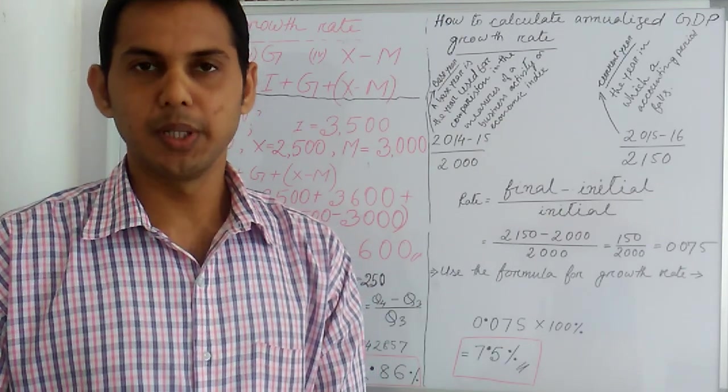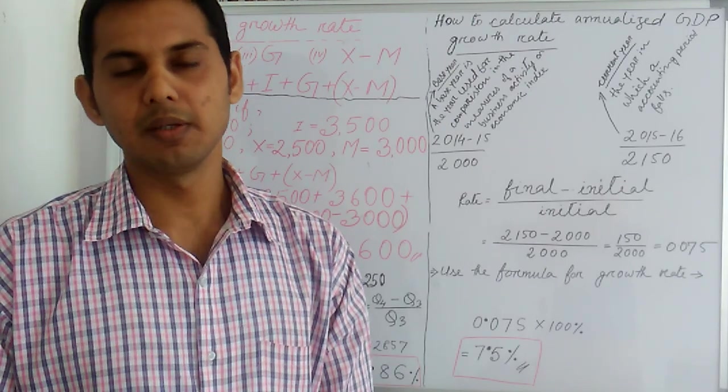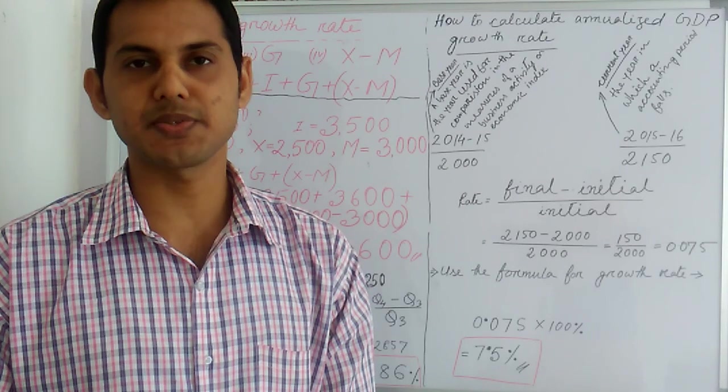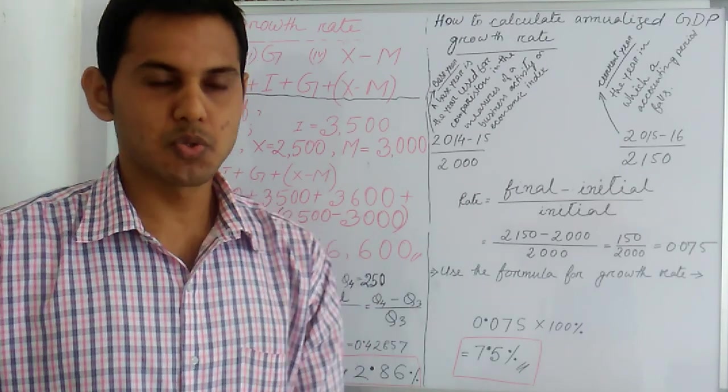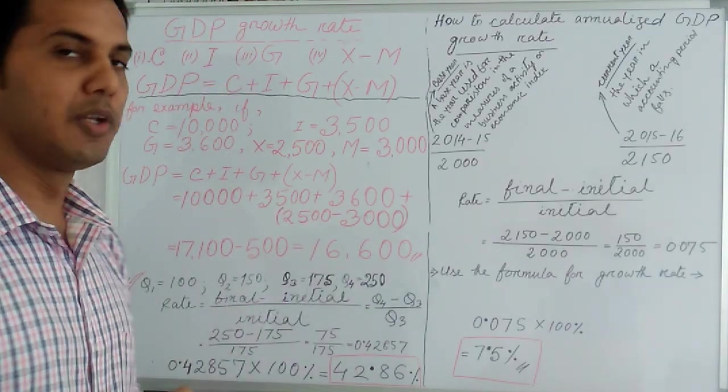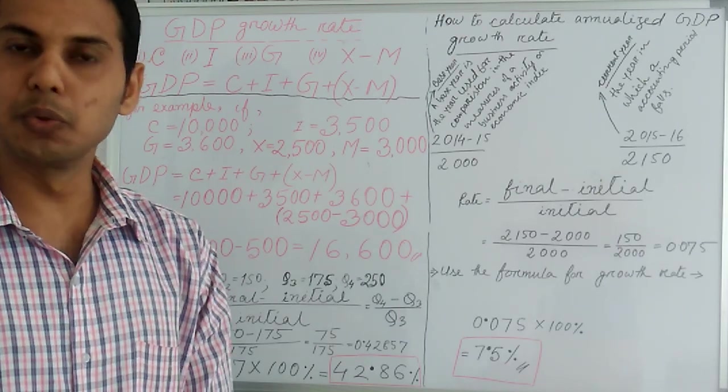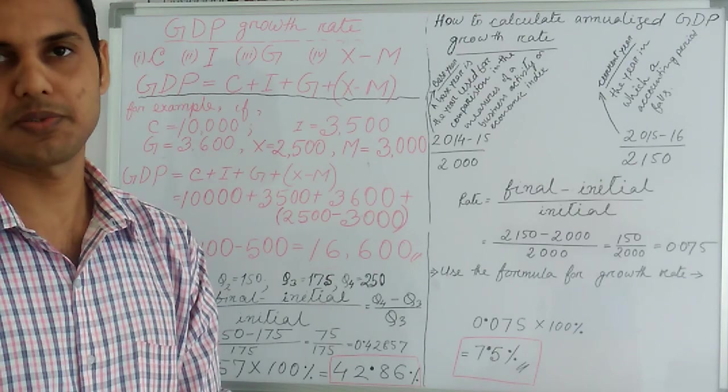Number one: C. Number two: I. Number three: Z, and number four: X minus M. So C denotes personal consumption. This includes the critical sector of retail sales.